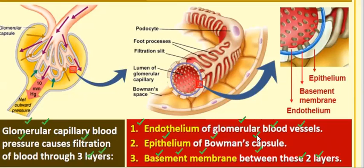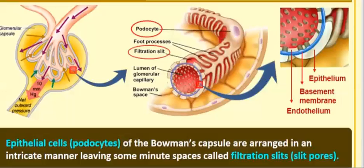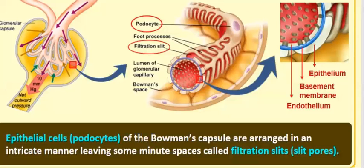The Bowman capsule is made up of simple epithelium. The epithelial cells, called podocytes, are arranged in an intricate manner with minute spaces called filtration slits and slit pores. These podocytes filter the blood — the liquid passes through while solids go back.